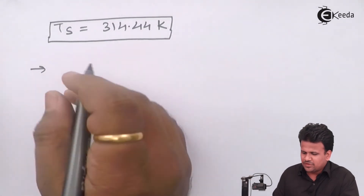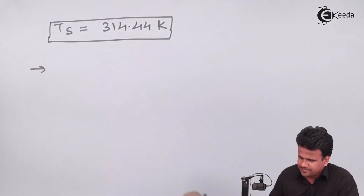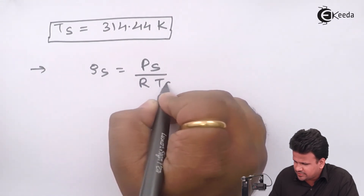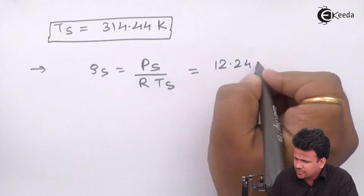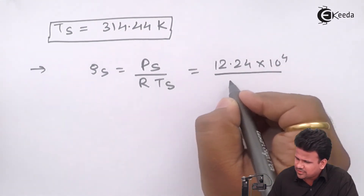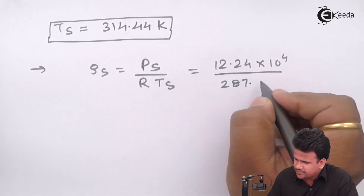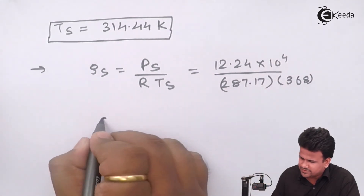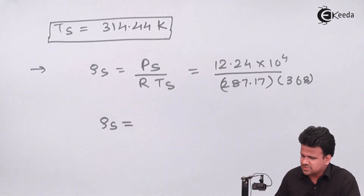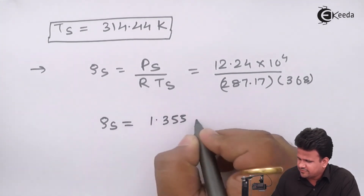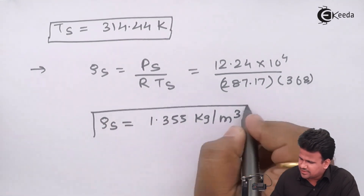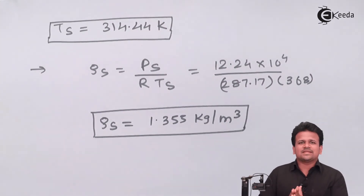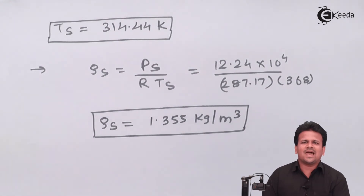Stagnation density, since we don't have the initial density of the fluid, can be calculated by rho_s equals PS upon R into TS. Substituting 12.24 into 10 to the power 4, R equals 287.14, and stagnation temperature 314.44 Kelvin, the stagnation density comes out to be 1.355 kg per meter cube. I hope you have understood how we calculate the Mach number, stagnation pressure, stagnation temperature, and stagnation density.